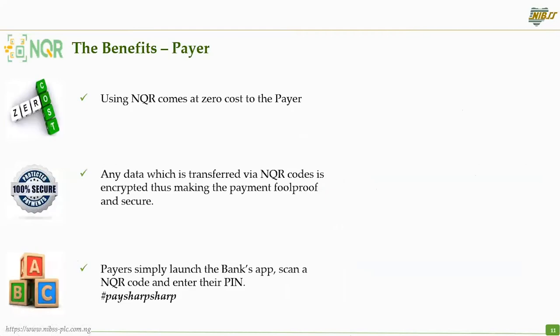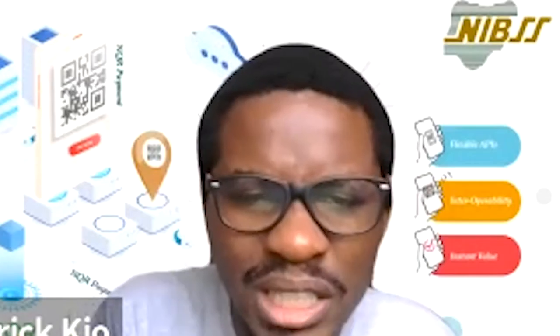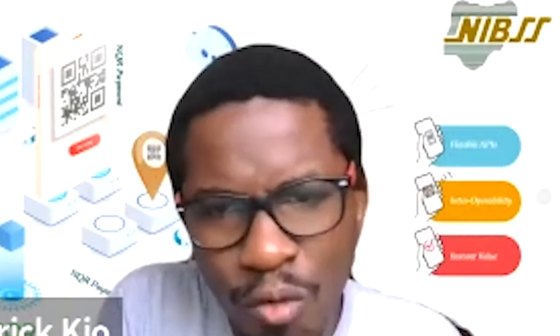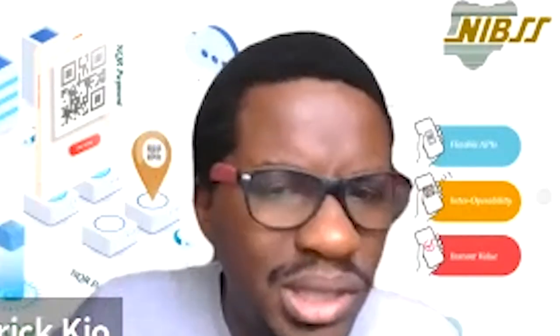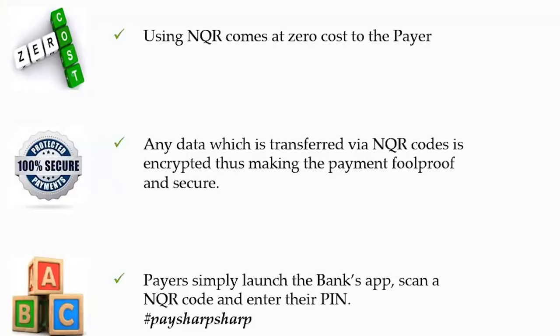Moving over to the benefits to the payer: using NQR to make payments is at no cost to the payer — the payer bears no cost. It's also 100% secure. The data is actually encrypted, meaning information is transmitted encrypted into a QR and routed to the system so it cannot be intercepted. You can get this done in three steps: log into your app, click 'Scan with QR,' scan the QR, put in your PIN — payment made.